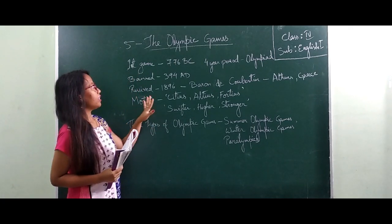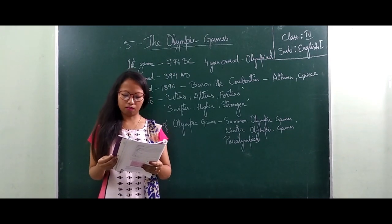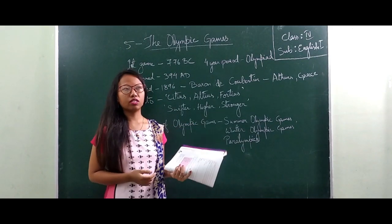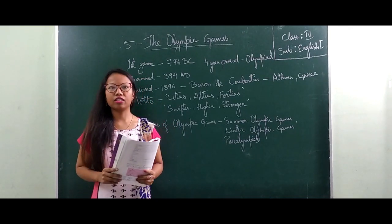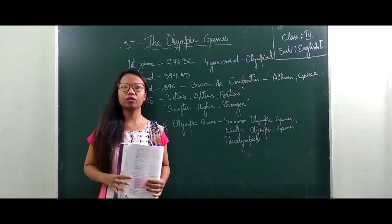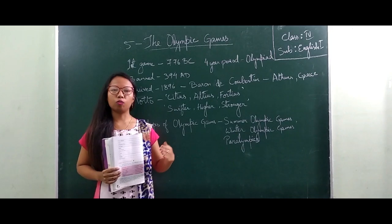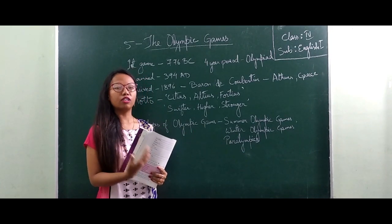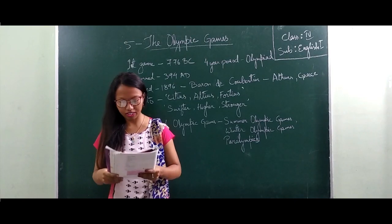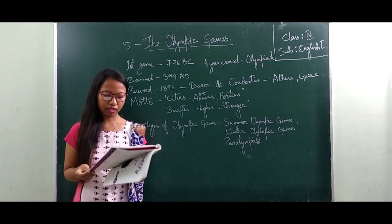So the first game was played around 776 BC, which was around 2700 years ago, and they had only one event at that time, that is the sprint. A sprint is a kind of running race which we play nowadays, like a small running race where we run for a short distance, for example around 100m race or 200m race. The race was normally run by men.